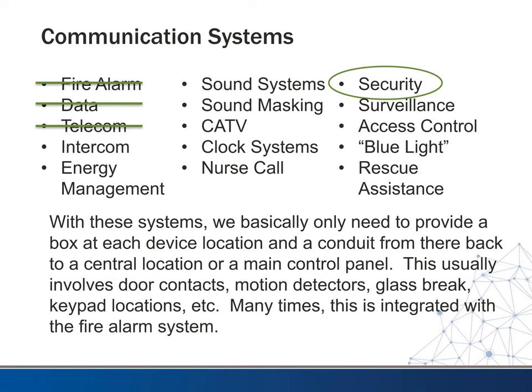With security systems, we basically just need a box at each device location and a central security control panel. From there we connect to door contacts, motion detectors, glass break sensors, and keypad locations. Many times this will also integrate with the fire alarm system as well.